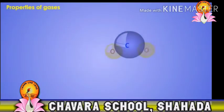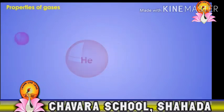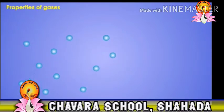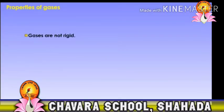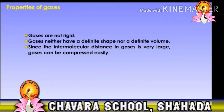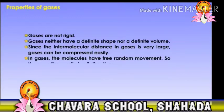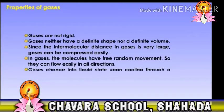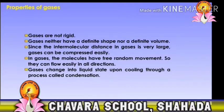Examples of gases: hydrogen, oxygen, carbon dioxide, nitrogen, helium, argon. These are the examples of gases. Gases are not rigid. Gases neither have a definite shape nor a definite volume. The intermolecular distance in gases is very large. Gases can be compressed easily. In gases, the molecules have free random motion so they can flow easily in all directions. Gases change into liquid state upon cooling through a process called condensation.